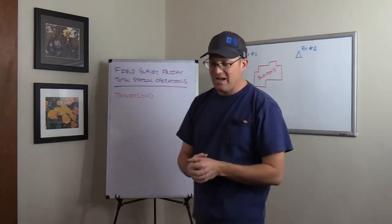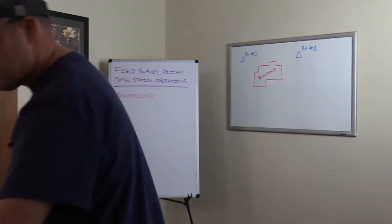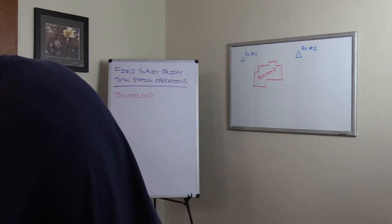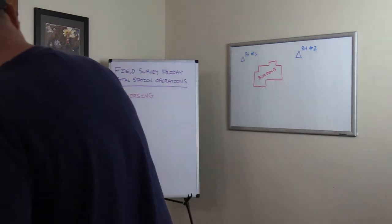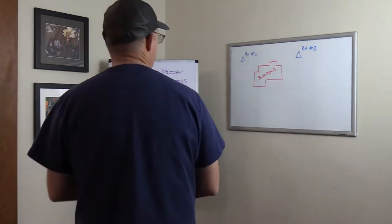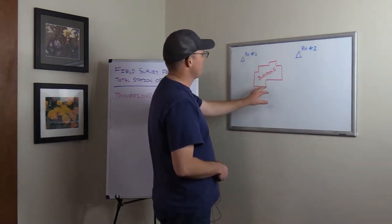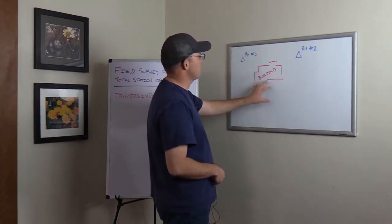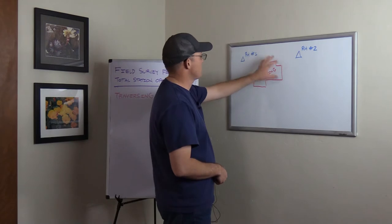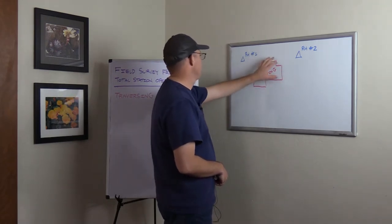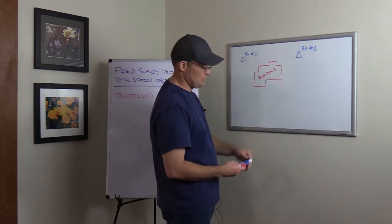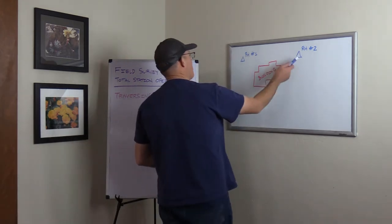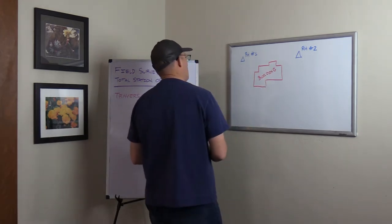I've got an example on the board. We're just going to walk through it together. Let's say we want to survey around this building — we need to survey all the building corners and all the sidewalks and doors and building features around this building. When we go out, we set two points: RH1 and RH2.